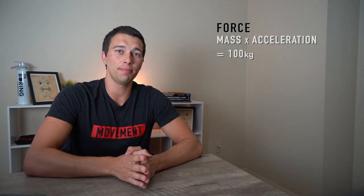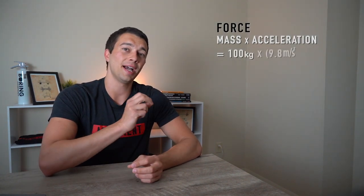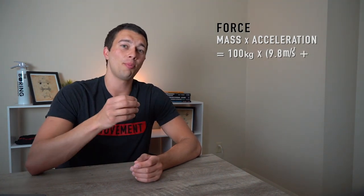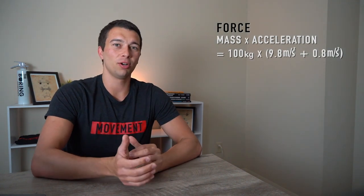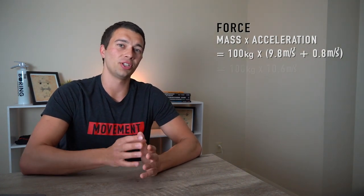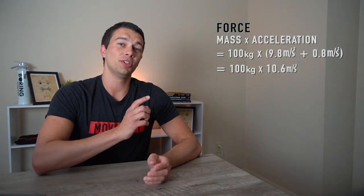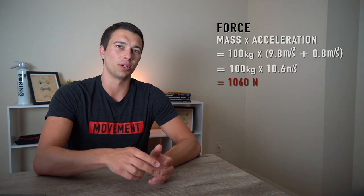So going back to our equation, F equals MA, we're going to calculate force equals the mass, the 100 kilogram barbell, times the acceleration, which is 9.8 meters per second squared plus the acceleration of the barbell upward of 0.8 meters per second squared. So 9.8 plus 0.8 gets us a total acceleration of 10.6 meters per second squared. Multiply that by 100 kilograms to get 1060 newtons of force.